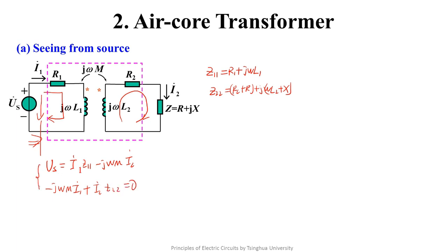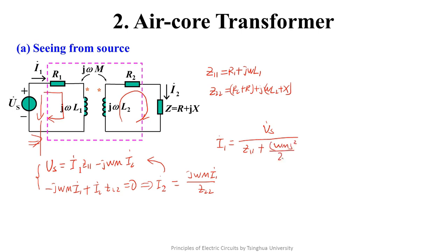These two equations cover all the knowledge of the air core transformer. To find the equivalent circuit seen from the source, we eliminate I2 from the two equations. Substituting and simplifying, we get an expression in the typical form of Ohm's law — voltage, current, and impedance. The impedance is a series connection of two parts: Z11 is the total impedance of the primary side, and the term ω²M²/Z22 is the impedance reflected to the primary side by the transformer, called the reflected impedance.